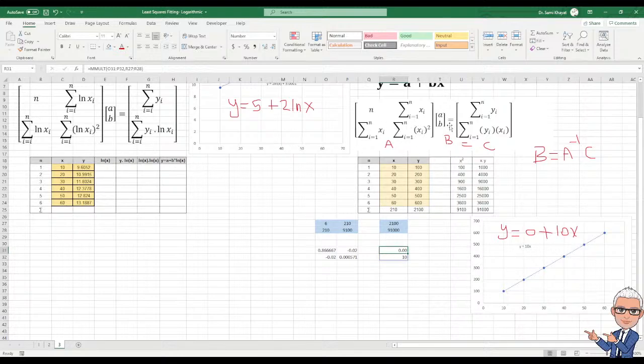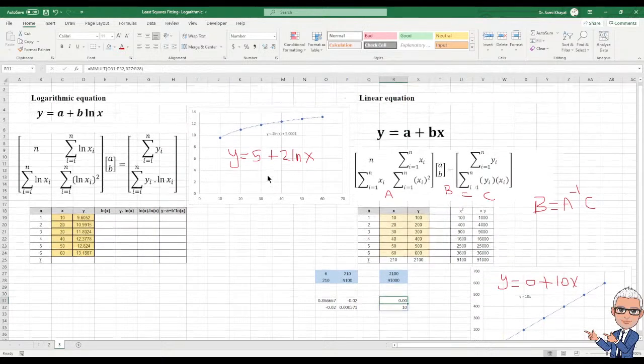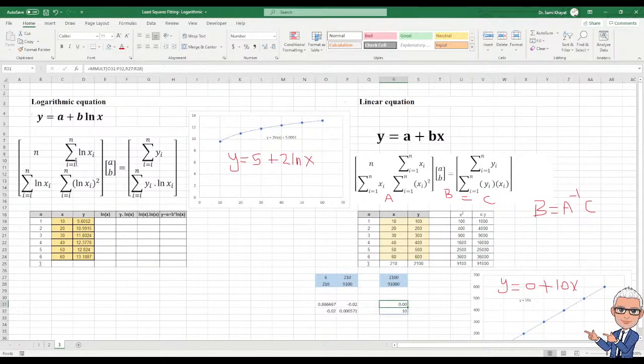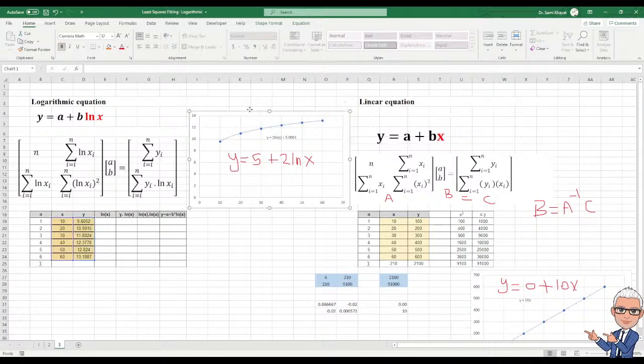Now let's talk about to modify this matrix to make it fitting this one. If you look here is Y, I have Y. A, A still no problem. B, B still okay, no problem. But here I have ln x. You can see ln x. I have ln x. But here I have x. This is my difference. Now everywhere ln x, I will change it to ln x.